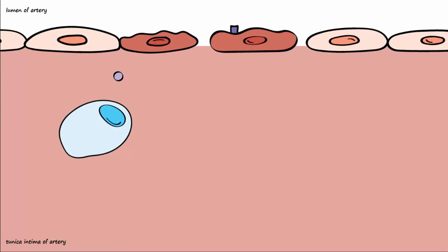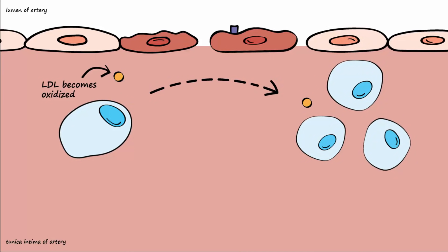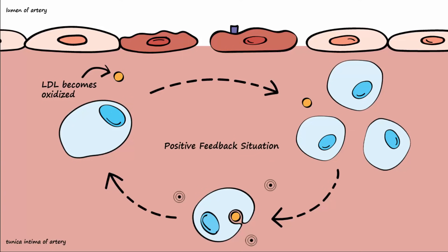White blood cells are capable of producing free radicals. And when these free radicals come in contact with LDLs, oxidation occurs. Oxidized LDL particles are especially effective at attracting and activating white blood cells. White blood cells then engulf the modified LDL particles, which stimulates them to produce even more oxygen-free radicals. It becomes easy to imagine that an area of endothelial damage will lead to an accumulation of modified LDL particles and migrating white blood cells. A positive feedback situation begins to arise when accumulating immune cells and modified LDLs bring in even more immune cells and modified LDLs.